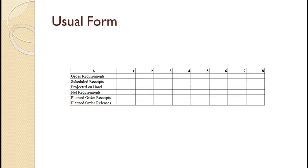The screen shows the typical MRP form that you most likely have in your textbook. Gross Requirements are the period-by-period total expected demand for the item. For an independent demand item, like an A in the earlier bill of material, these quantities come from the master production schedule. For items below the independent demand item in the bill of material, these quantities are calculated as part of the MRP planning process.